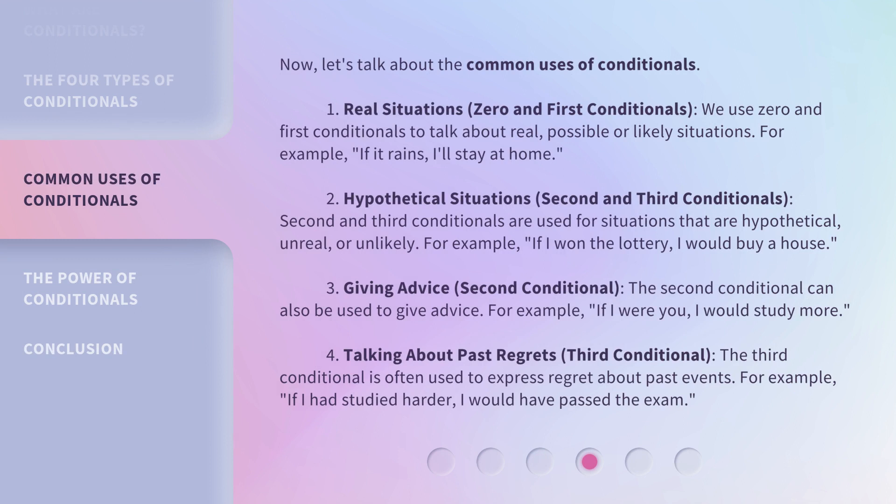Now, let's talk about the common uses of conditionals. 1. Real situations — zero and first conditionals. We use zero and first conditionals to talk about real, possible, or likely situations. For example, "if it rains, I'll stay at home." 2. Hypothetical situations — second and third conditionals. Second and third conditionals are used for situations that are hypothetical, unreal, or unlikely. For example, "if I won the lottery, I would buy a house."